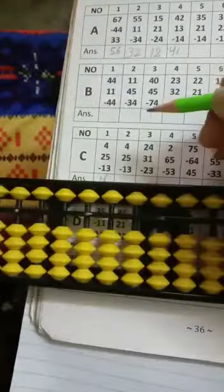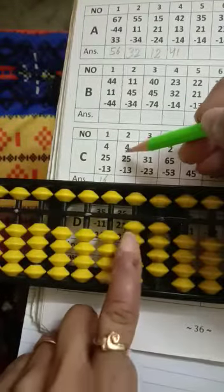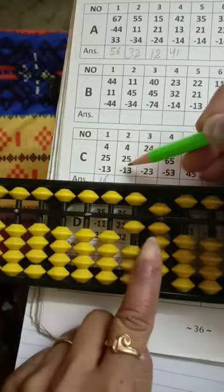Now second one, 4, then 20 add 5, minus 10 and minus 3. Answer will be again 16.